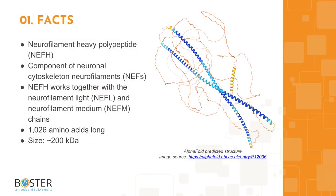Topic 1: Quick facts about NEFH. Neurofilament heavy polypeptide, or NEFH, is part of the neuronal cytoskeleton neurofilaments. It combines with neurofilament light and neurofilament medium chains to make the different neurofilaments throughout our body. NEFH is 1026 amino acids long and runs at about 200 kilodaltons on the western blot.